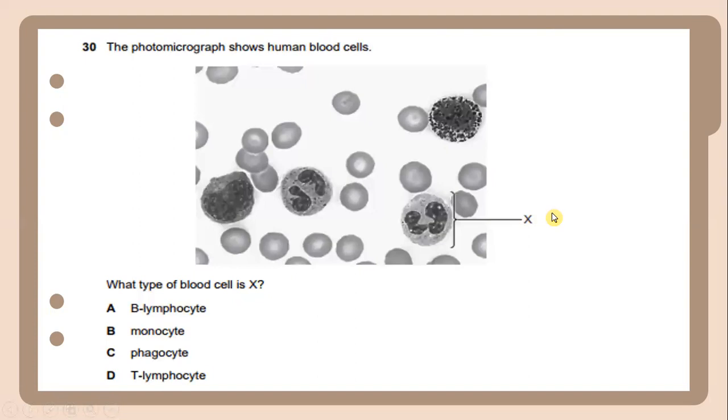The photomicrograph shows human blood cells. What type of blood cell is X? X is a phagocyte.